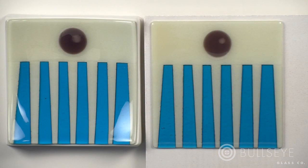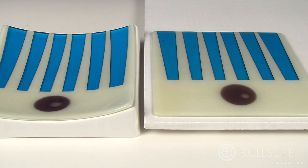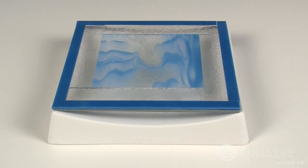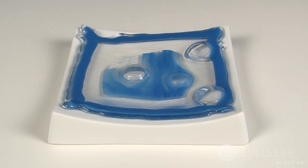Slumping is a relatively low temperature process. It is done separately and is not combined with higher temperature processes such as fusing. If you try to fuse and slump in one step by firing glass to a full fuse in a slumping mold, the resulting piece will be misshapen and likely stuck to the mold.